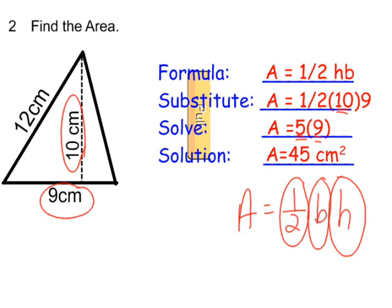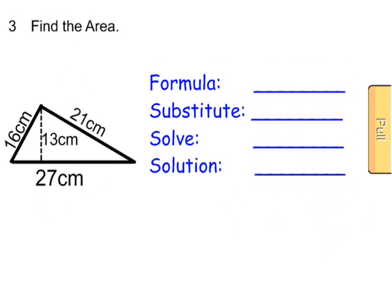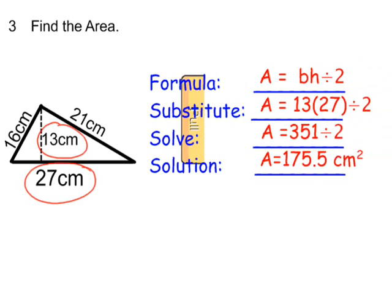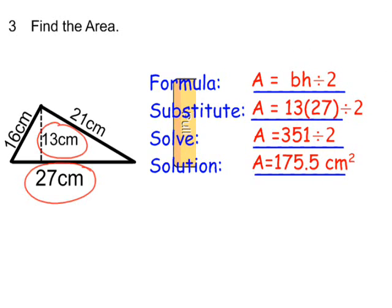In this next example we have two odd numbers — the base is odd and the height is odd. When both are odd, I like to do base times height and then divide by 2. So you take 13 — the height — times 27 — the base — and then divide by 2.